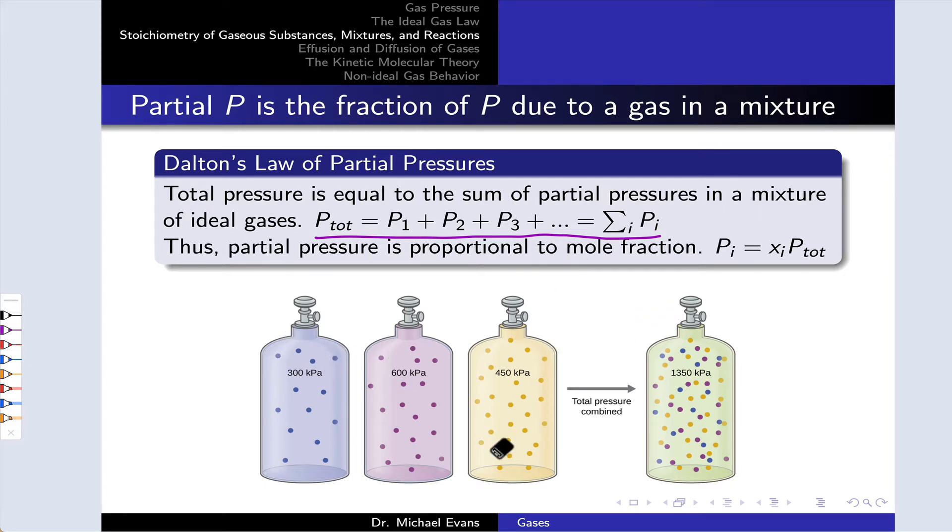Say, for example, I've got three cylinders of gas containing gases at these pressures: 300 kilopascals, 600 kilopascals, and 450 kilopascals. If I transfer all of these into a fourth cylinder with the same volume as the first three, the total pressure of the mixture will be the sum of these individual partial pressures, 1,350 kilopascals.